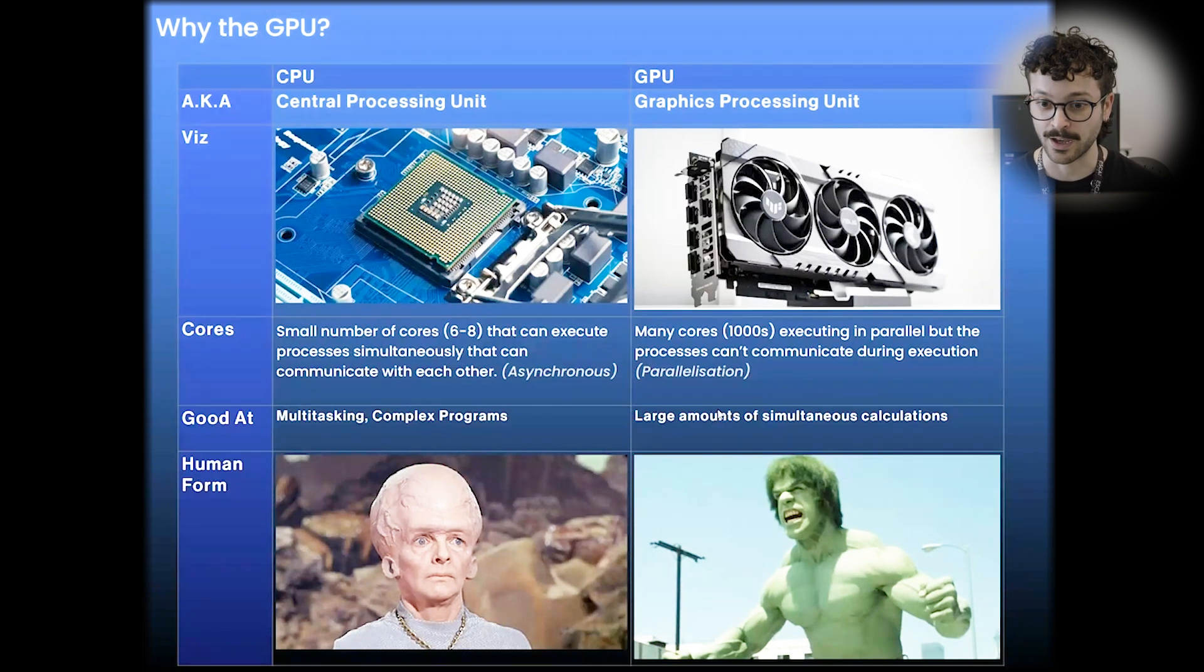The GPU, on the other hand, has many, many cores, sometimes thousands that are all executing in parallel. But the processes can't communicate during this execution. So this is something called parallelization. This is very, very good at doing a large amount of the same task. So for every single pixel, the fragment shader, the GPU pipeline is running and is pumping out those final pixel colors to the screen. So you can kind of think of it as a very, very strong superhero, but who's not that clever.